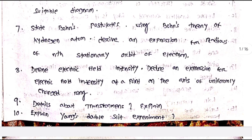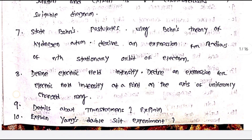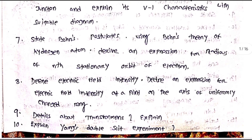State Bohr's postulates. Using Bohr's theory of the hydrogen atom, derive an expression for the radius of the nth stationary orbit of the electron.